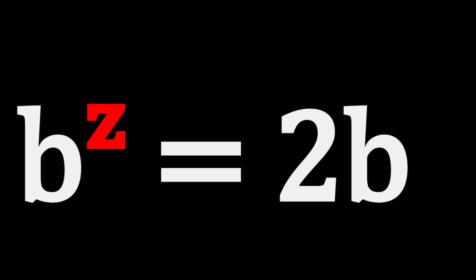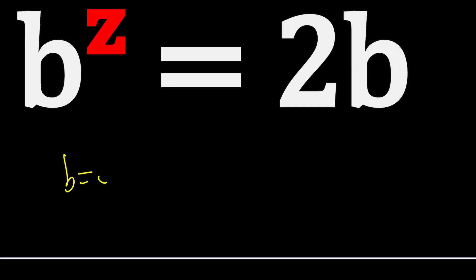Because depending on the value of B, we get different solutions. For example, if B is 0, then Z can be anything besides 0, right? If B is 0, you get 0 to the Z equals 0. Anything besides 0 should work.